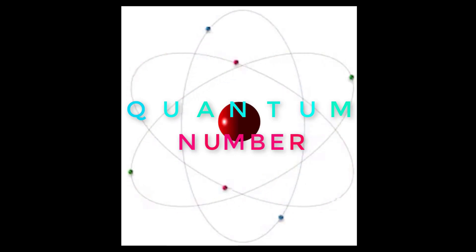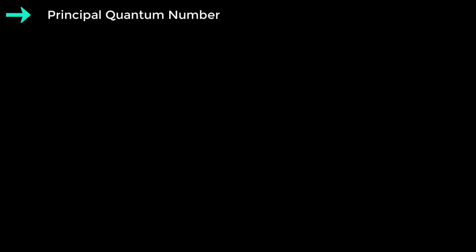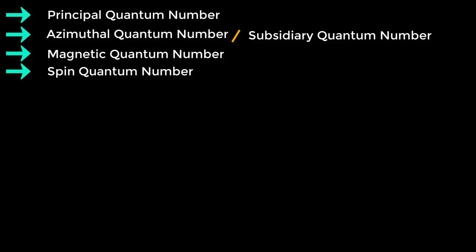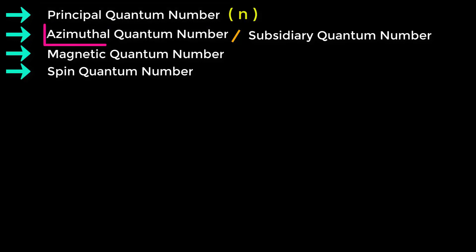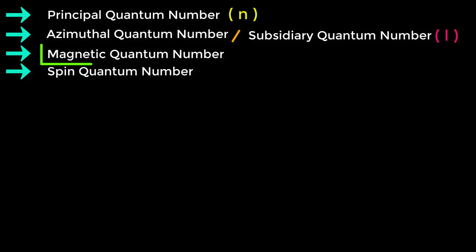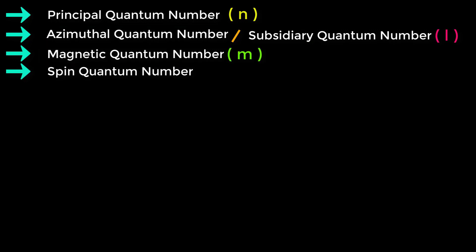There are four quantum numbers used to describe the exact position and nature of an electron. They are principal quantum number, azimuthal quantum number or subsidiary quantum number, magnetic quantum number, and spin quantum number. Principal quantum number is represented by N, azimuthal quantum number by L, magnetic quantum number by M, and spin quantum number by S.